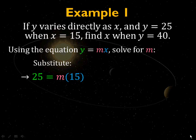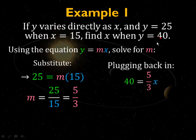25 in place of y and 15 in place of x, you're going to solve for m. The constant of variation is solved for by dividing both sides by 15, and you get m equals 5 thirds. Now, to find x when y equals 40, you just plug it back in. You plug in 40 for y, you plug in 5 thirds for m, and you're going to solve for x. Simply solving for x, you get x is 24.